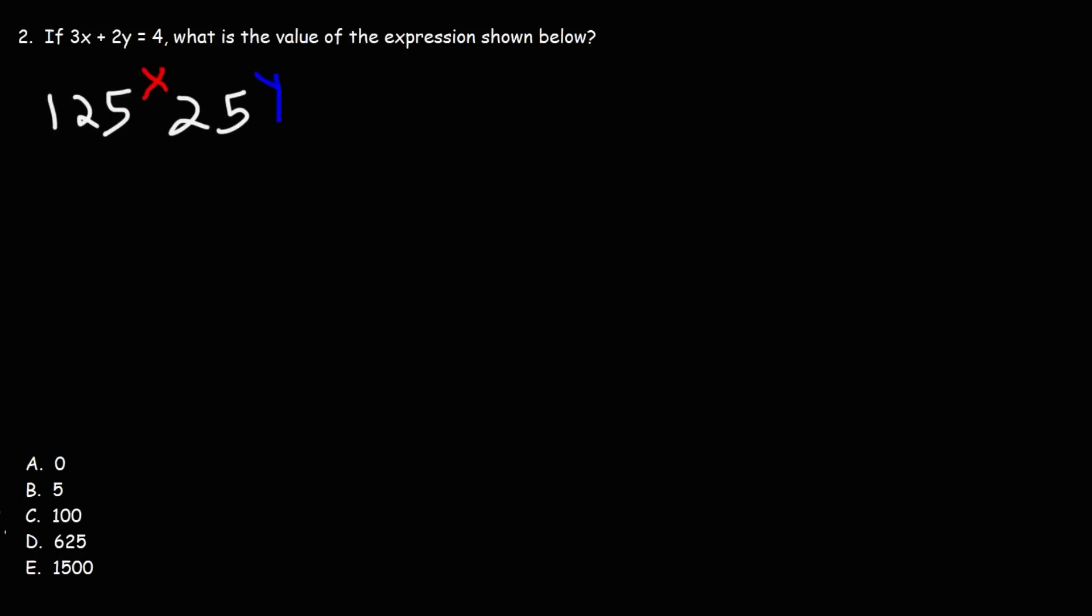Now this problem is very similar to the last problem. If 3x plus 2y is equal to 4, what is the value of the expression shown below? Now just like the last problem, we need to find a common base. So what's a common base of 125 and 25? We know this to be 5.